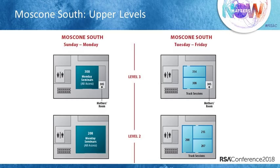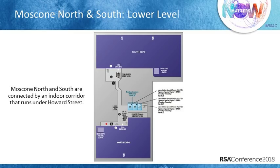Looking at the upper levels of Moscone South, more sessions on floors two and three. On Monday we have seminars, and then these rooms also flip into track session rooms later in the week. If you go down to the lower level of Moscone South, you'll come across our first expo, the South Expo. You can walk through an indoor corridor underground under Howard Street to our North Expo. We also have a number of sponsor and association sessions taking place near the North Expo.